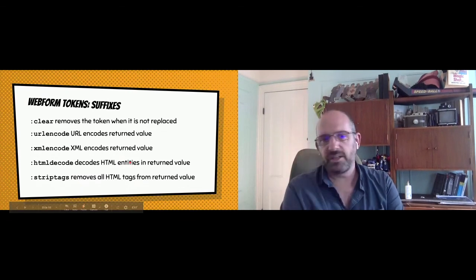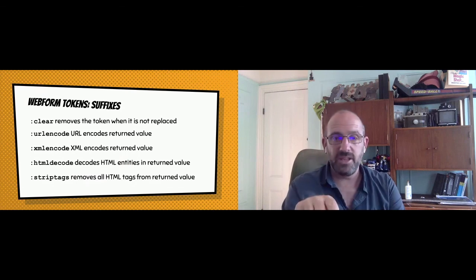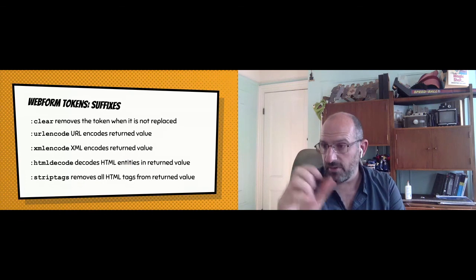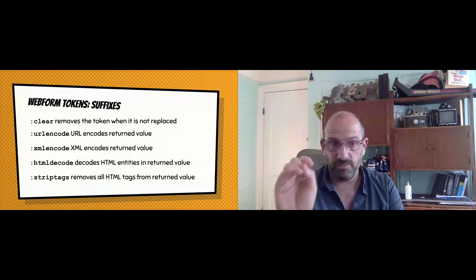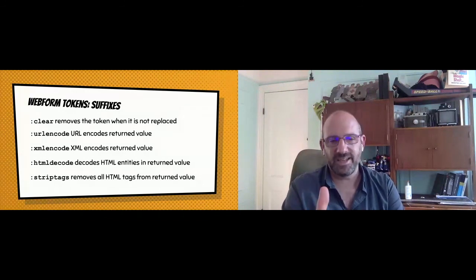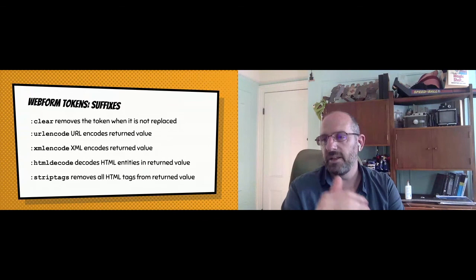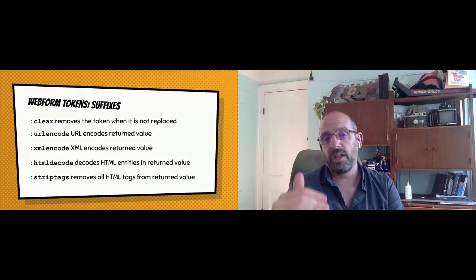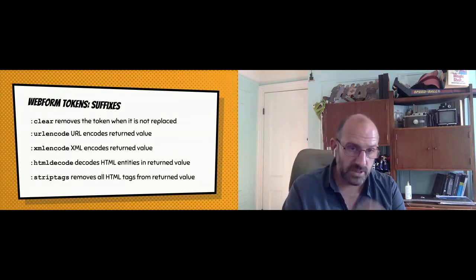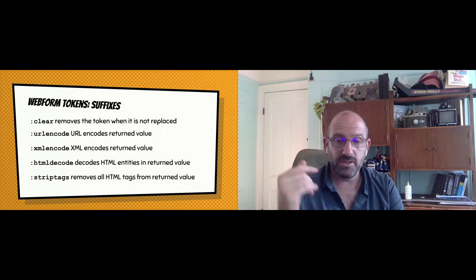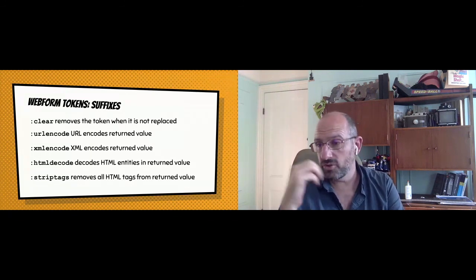These are Webform token suffixes — you add them to the end of your tokens and they do things. You can use 'clear': if you have a token and the value doesn't exist, it'll remove the token and people won't see it. If you're taking tokens and inserting them in different contexts, 'urlencode' will URL-encode the value. If you need to insert a token in XML, you can use the XML code. If you need to decode HTML entities, you can do that, or you can even strip tags.